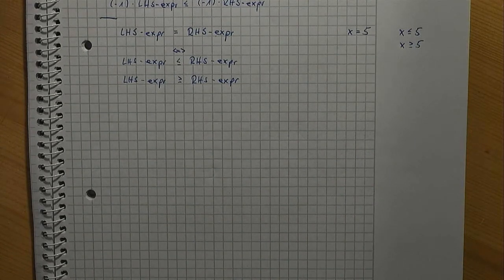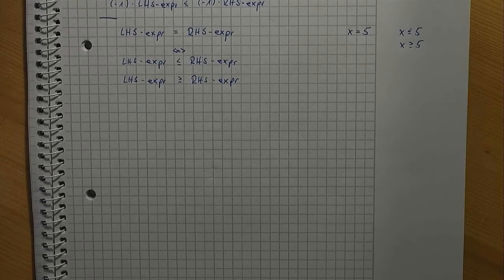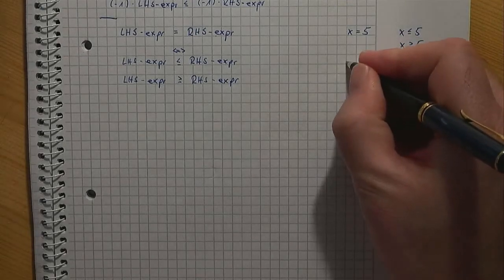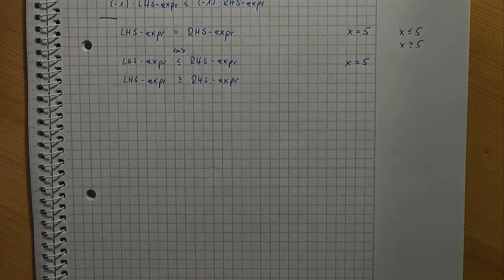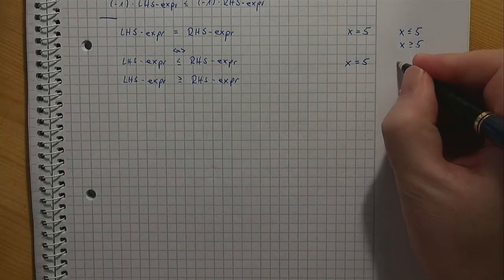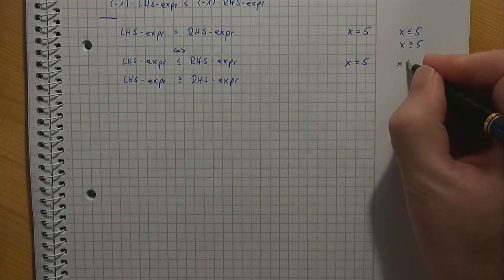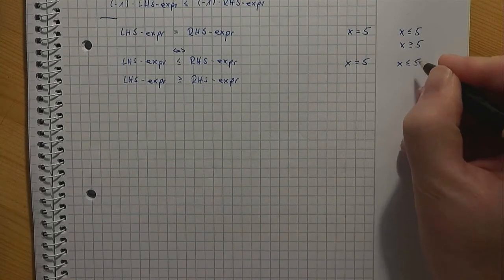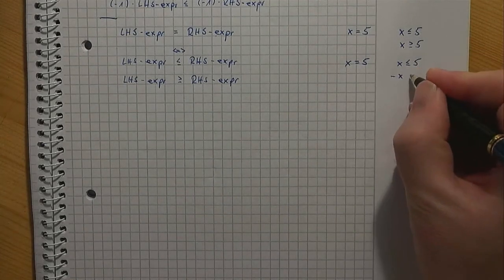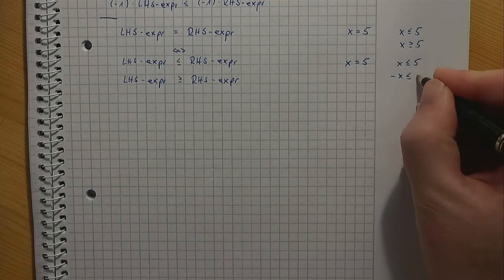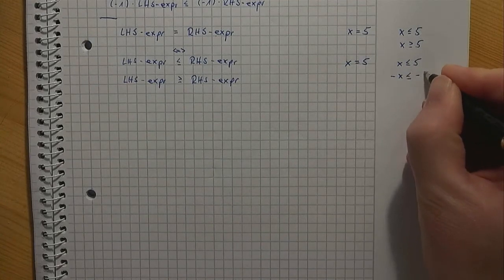It should be noted that you can combine different transformations. For example, it should be easy to derive that x = 5 is equivalent to x ≤ 5 and −x ≤ −5.